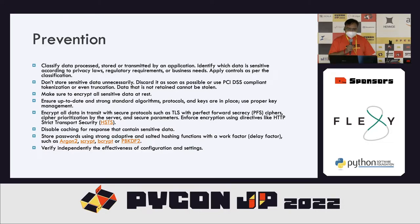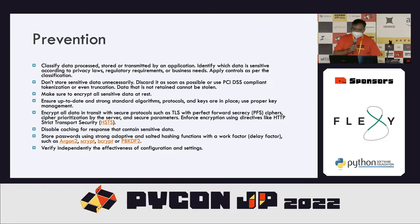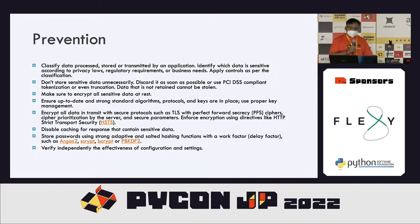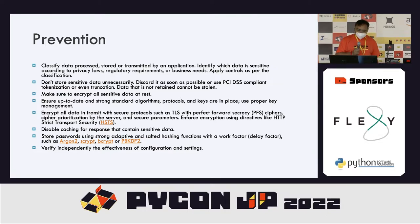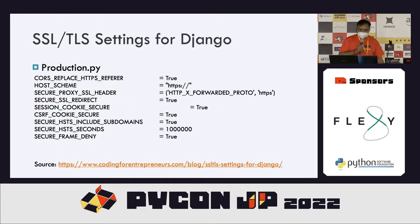Additional prevention measures include: encrypt all sensitive data at rest; ensure up-to-date and strong standard algorithms and protocols; encrypt all data in transit with secure protocols such as TLS; store passwords using strong, adaptive, and salted hashing algorithms; and verify independently the effectiveness of configuration and settings. You may have the best software, but if it is not configured properly, it becomes vulnerable. Some settings related to SSL or TLS for Django include setting options in production.py, such as SECURE_SSL_REDIRECT and SECURE_HSTS to true.